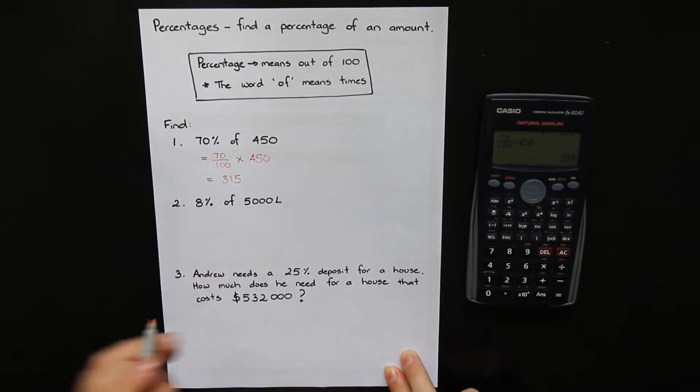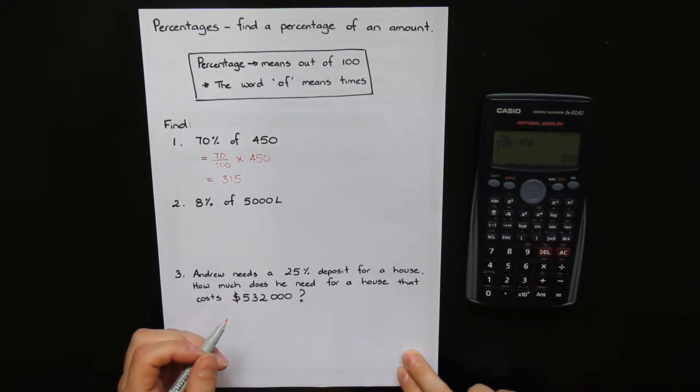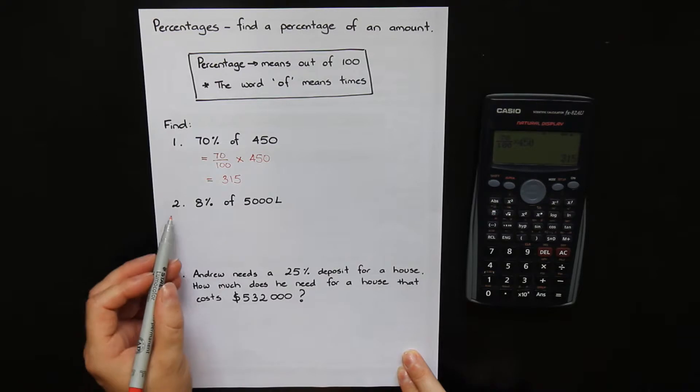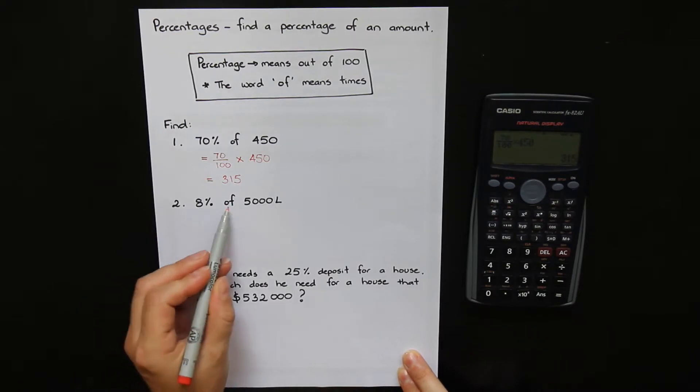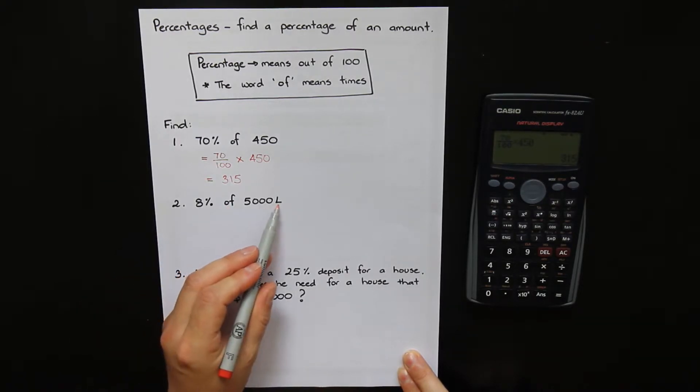So 70% of 450 is 315. Let's repeat the process for question 2. We want to find 8% of 5000 litres.